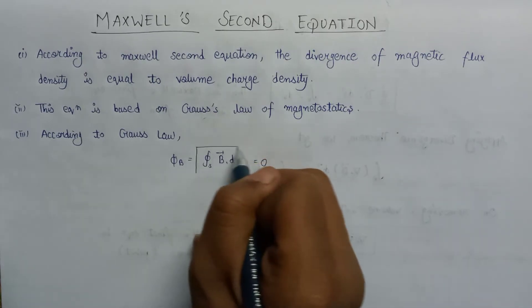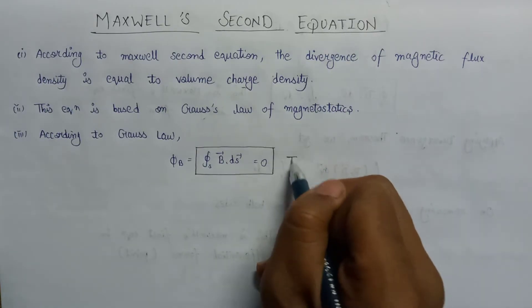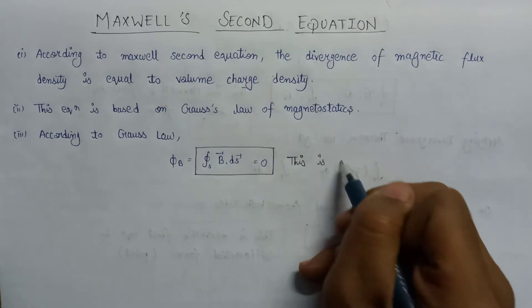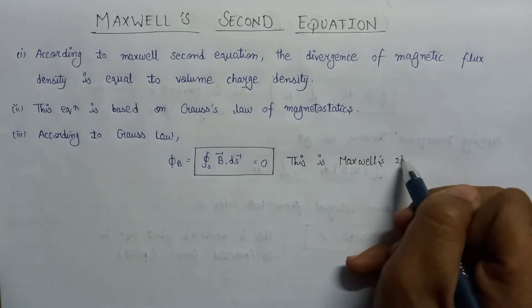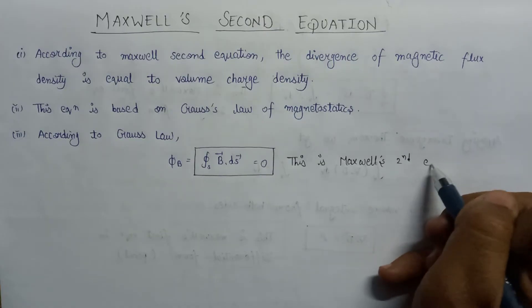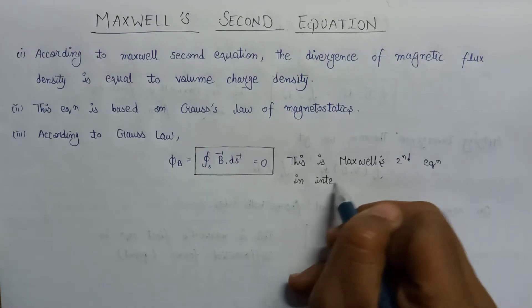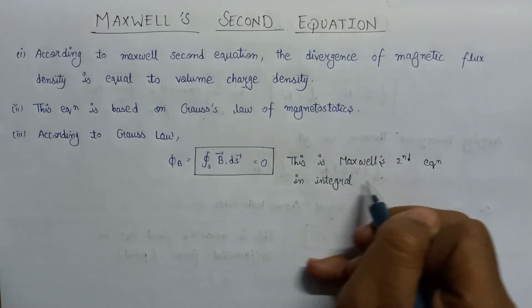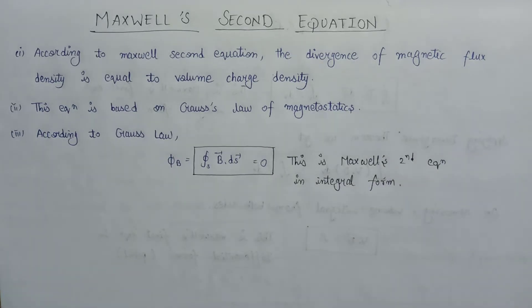This expression, the integral of B·dS over a closed surface equal to zero, is nothing but the integral form of Maxwell's second equation. According to Maxwell's second equation in integral form, the net magnetic flux through a closed surface is equal to zero.